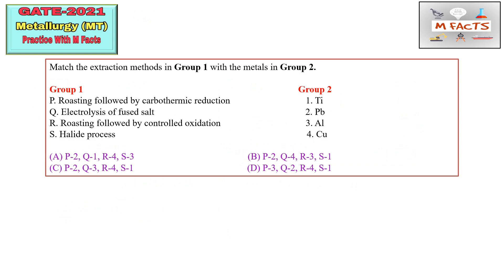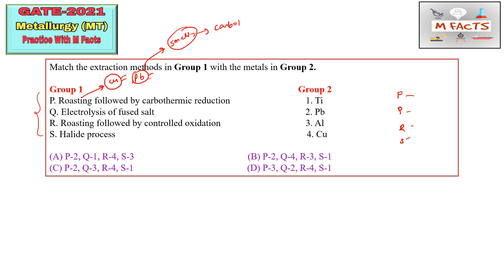The next question is from extractive metallurgy. For every matching type question, try to find the odd one or unique one. We have two categories: roasting followed by carbothermic reaction, and roasting followed by controlled oxidation. Roasting can be done for all metal sulfides. Lead is produced through the smelting process in a blast furnace — that is carbothermic reduction. So P you can match by 2, that is lead.